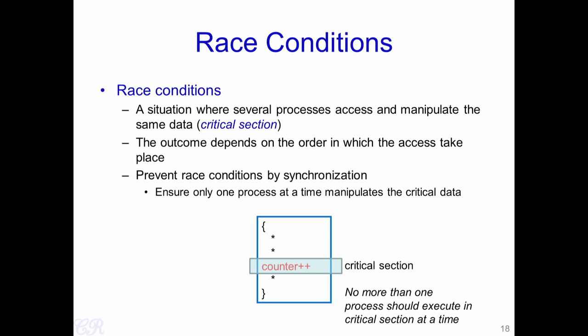The outcome of a race condition depends on the order in which accesses to that data take place. As seen in the previous example, depending on which program executes first and how context switches occur, the result would vary. Race conditions can be prevented by what is known as synchronization — we ensure that only one process at a time manipulates the critical data. We mark the area of instructions that access shared data as a critical section, then use additional techniques to ensure no more than one process can execute in a critical section at a given time.